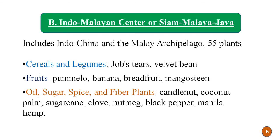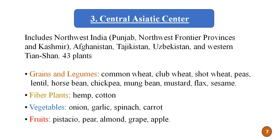The third center is the Central Asiatic center, which includes northwest India — Punjab, Kashmir — Afghanistan, Tajikistan, Uzbekistan, and western Tian Shan. This center includes 43 plants, some of which are listed here.